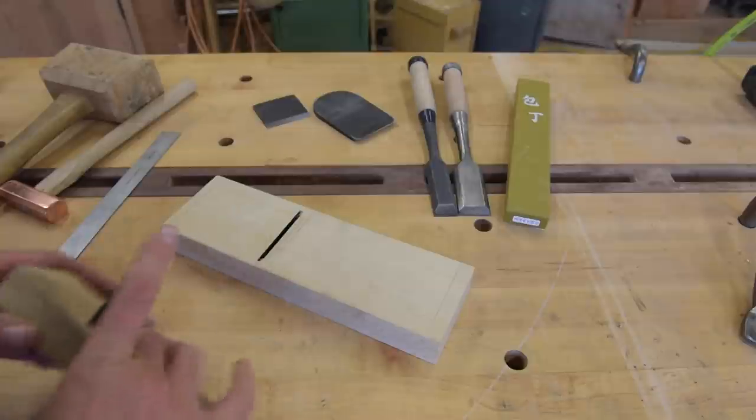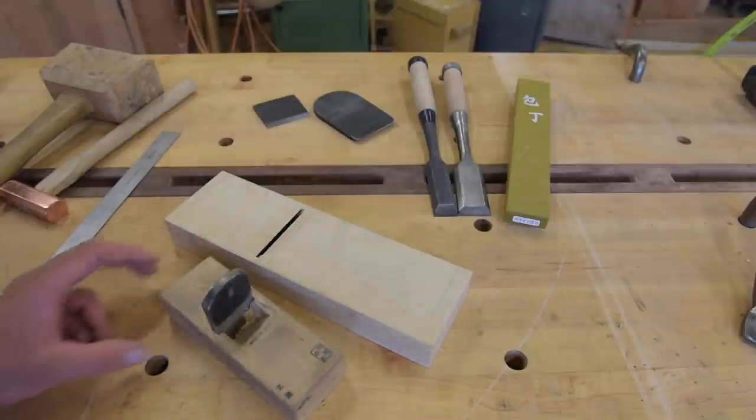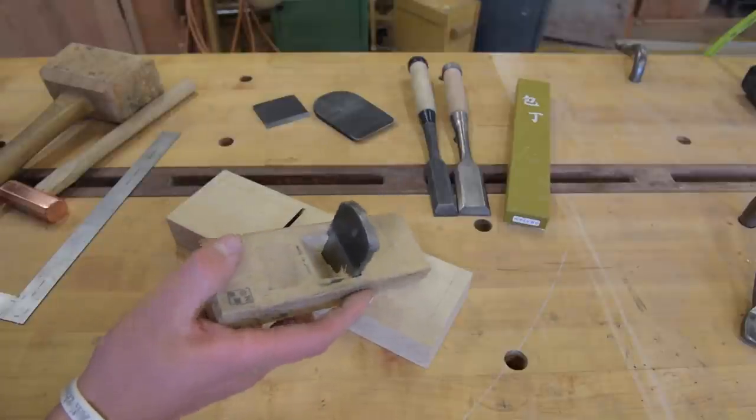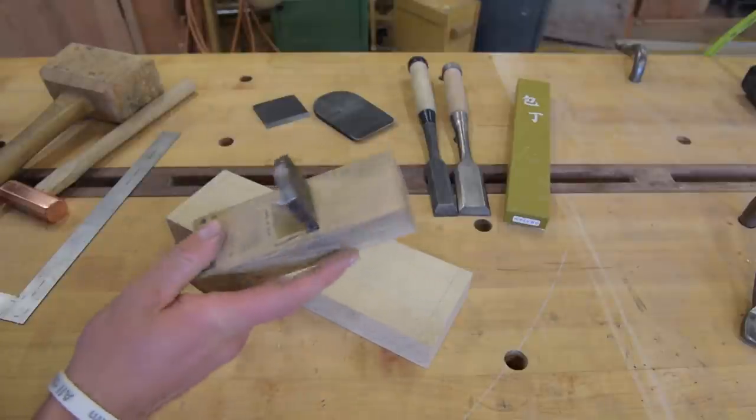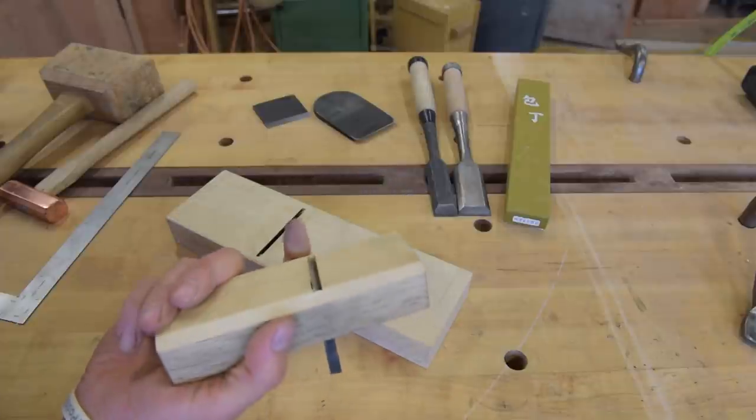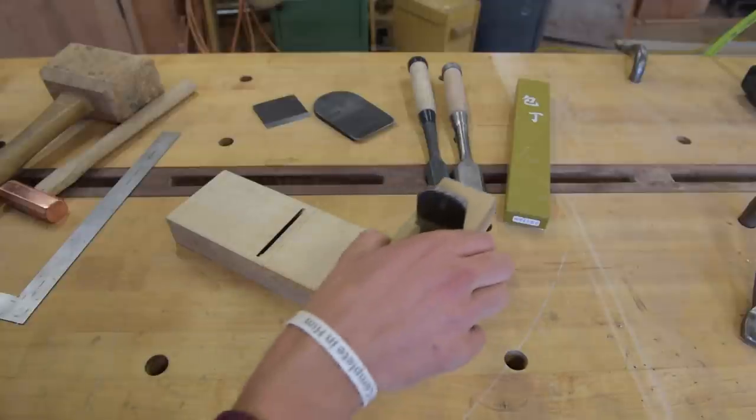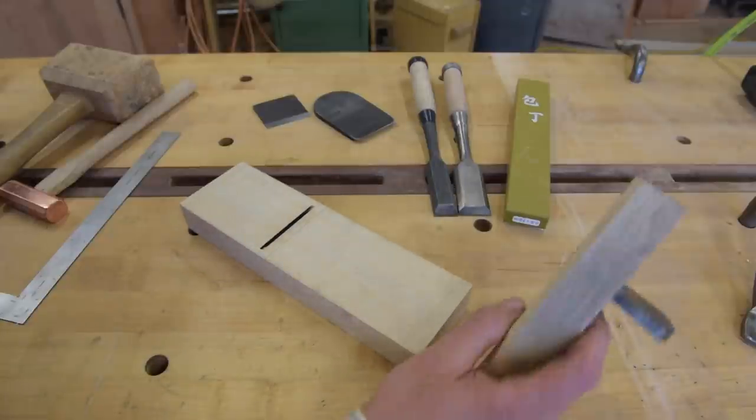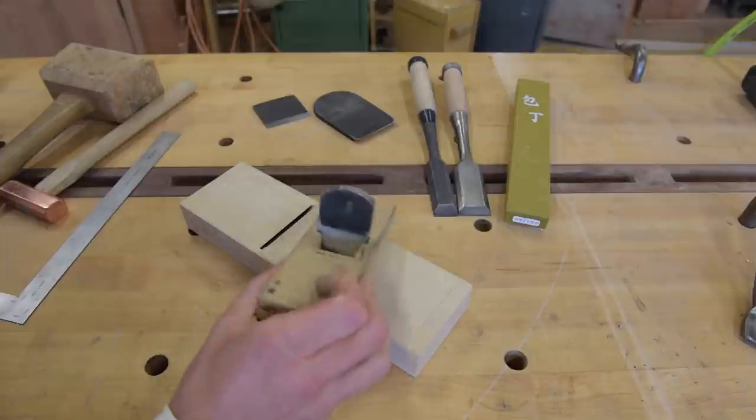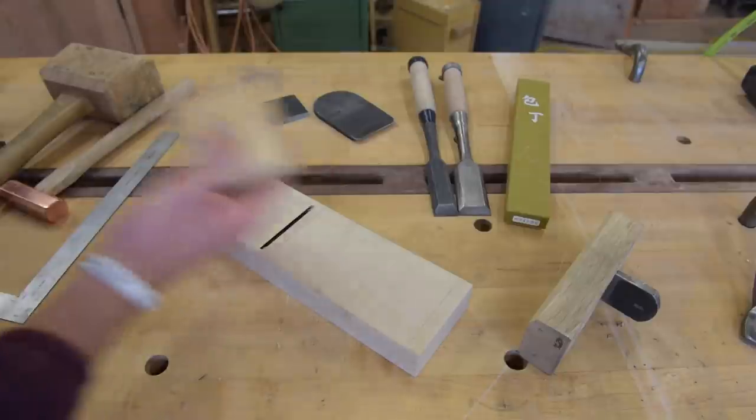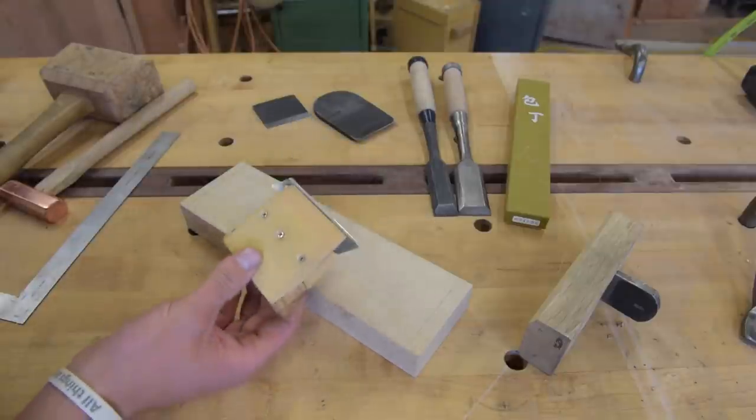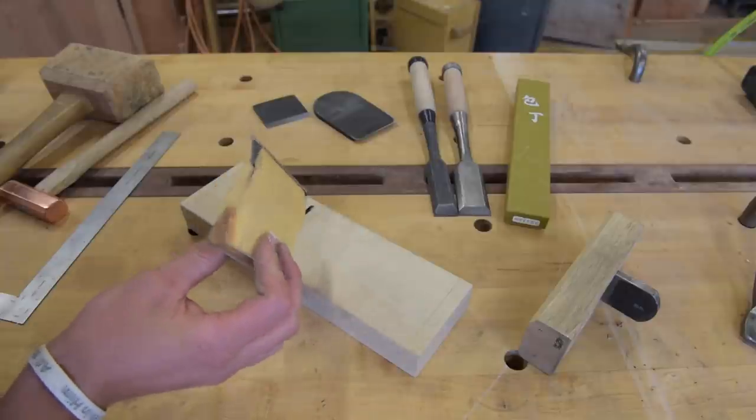Not everybody uses a scraper plane. I happen to have one. Here's my scraper plane. That's just a little plane blade with the wedge vertically in the block with a slight skew on it. And you just use that to scrape across the grain in order to remove that material. And that works fairly well. This is what the Japanese have been using for centuries.